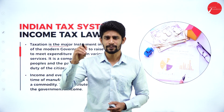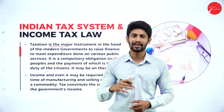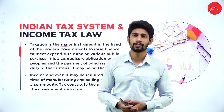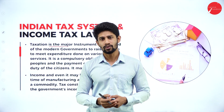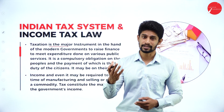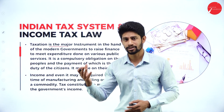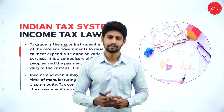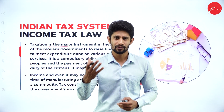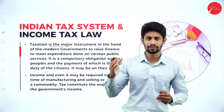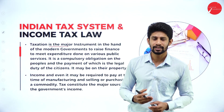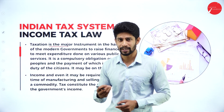A question might arise: what expenditures does the government have? The government has expenditures like paying salary to employees, construction of bridges and roads, paying scholarships to students, giving pensions to old age people, construction of drainages, giving light facilities and other facilities to the public. They will be having N number of expenditures, and to meet those expenditures they require money.